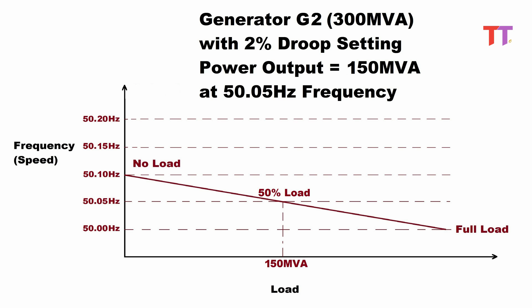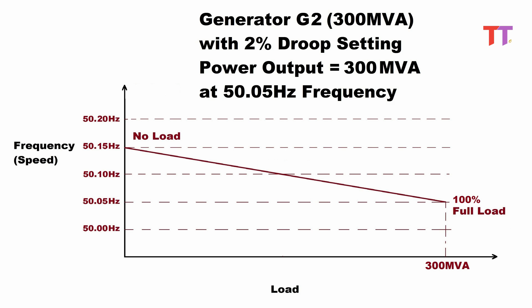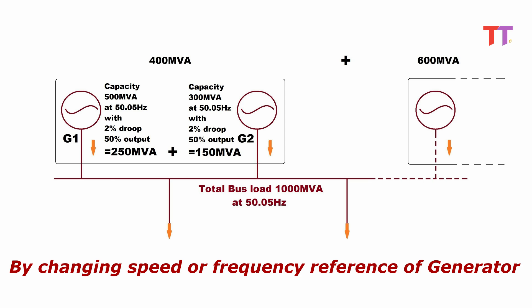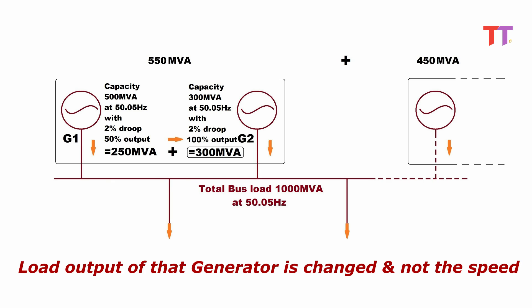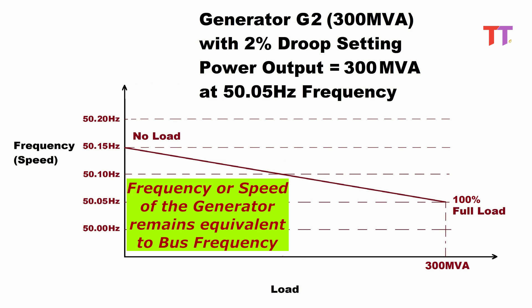In this way, using droop setting, the load of a generator can be controlled by varying the reference speed of the droop. From this we can see that by changing the speed or frequency reference of the generator, the load output of that generator is changed and not the speed. The frequency or speed of the generator remains equivalent to bus frequency.